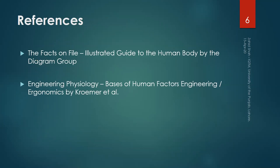The references for this lecture are the same as the previous lectures on the structure of the human musculoskeletal system. The first book is the Facts on File Illustrated Guide to the Human Body, and the second is Engineering Physiology: Basis of Human Factors Engineering/Ergonomics by Comer et al. I would like to explain the structure of the human backbone with the help of a freehand sketch, and I recommend you to draw along with me.